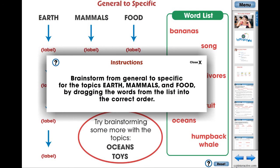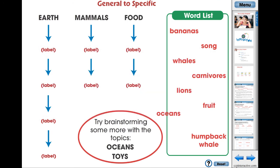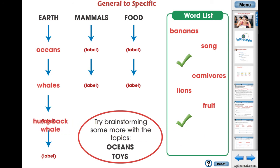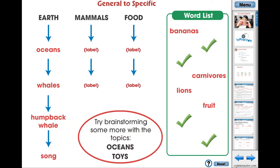The general-to-specific graphic organizer is an engaging app to support the comprehension of the content in the reading passage. Students are given three topics and must match the correct words in the correct order.